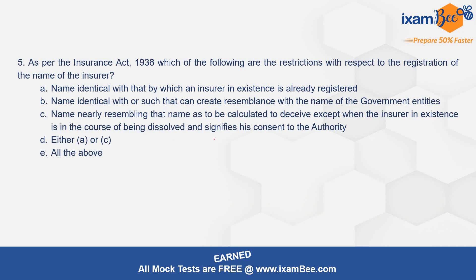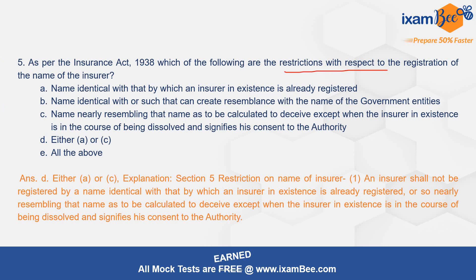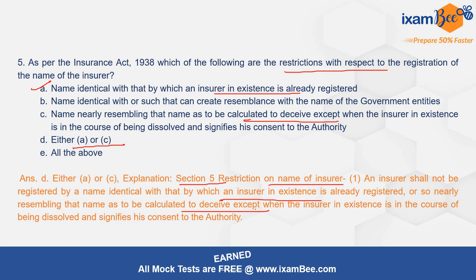Question number 5: as per the Insurance Act, which of the following are the restrictions with respect to the registration of the name of an insurer? The correct option is D — either A or C. Option A refers to a name identical to that by which an existing insurer is already registered, or a name so nearly resembling it as to be calculated to deceive, except when the insurer is in the course of being dissolved and signifies consent to the authority. Section 5 on restriction on the name of the insurer confirms that an insurer cannot register a name identical to or nearly resembling an existing insurer's name so as to deceive, unless that existing insurer is being dissolved and consents to the authority.